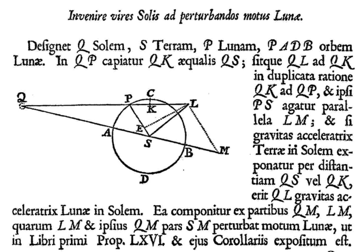Thus Newton concluded that it is only the difference between the sun's accelerative attraction on the moon and the sun's attraction on the earth that perturbs the motion of the moon relative to the earth. Newton then in effect used vector decomposition of forces to carry out this analysis. In Book I Prop. 66 and in Book III Prop. 25, he showed by a geometrical construction, starting from the total gravitational attraction of the sun on the earth and of the sun on the moon, the difference that represents the perturbing effect on the motion of the moon relative to the earth. In summary, line Ls in Newton's diagram represents the size and direction of the perturbing acceleration acting on the moon in the moon's current position p.